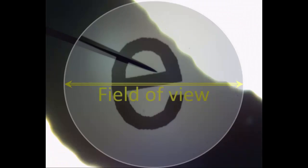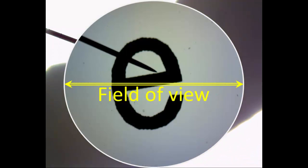Finally, adjust your letter E so that it is in the center of your field of view using the stage adjustment knobs. Notice how much smaller the field of view is here compared to what we saw with the scanning objective.